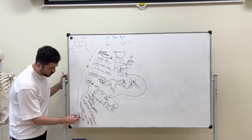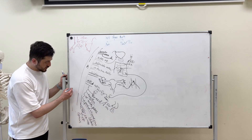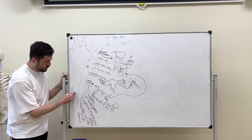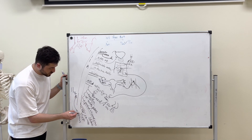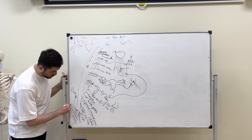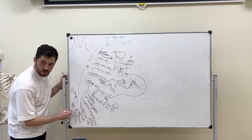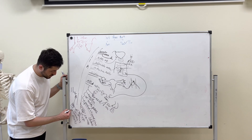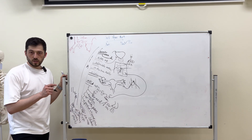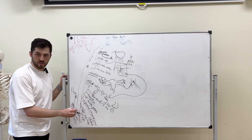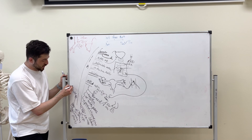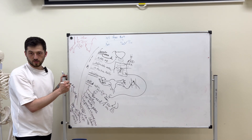Corona mortis means 'crown of death.' If a surgeon accidentally cuts this anastomosis during surgery, the patient will lose blood very quickly because blood will be lost from both the external iliac artery and the internal iliac artery simultaneously.